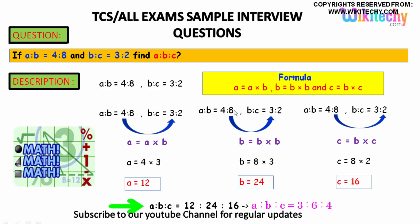So A is equal to a times b. A is 4 and b is 3, so 4 into 3 is 12. B is equal to b times b, so B is 8 here, b is 3 here, 8 into 3 is 24.